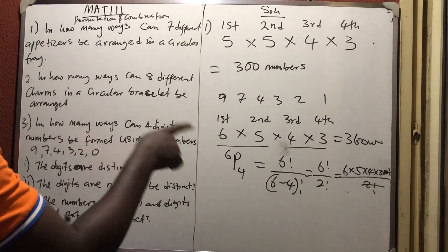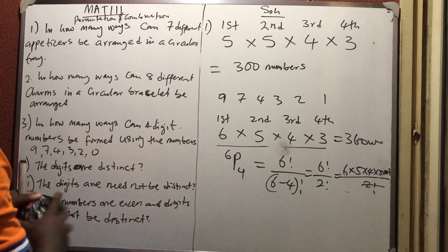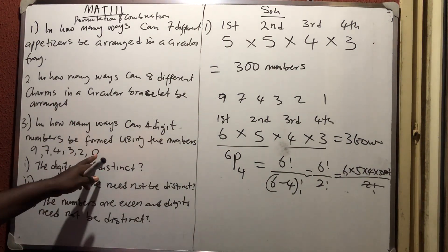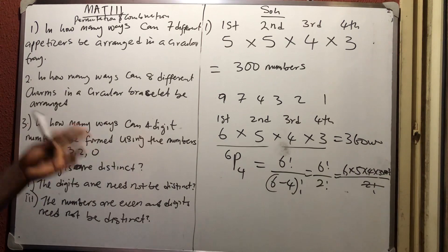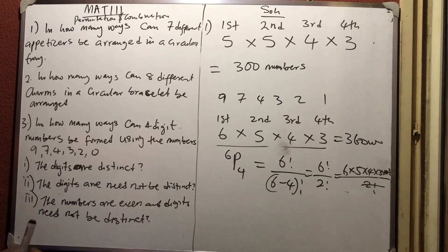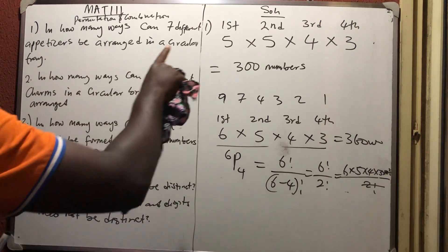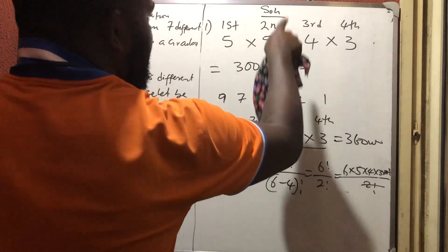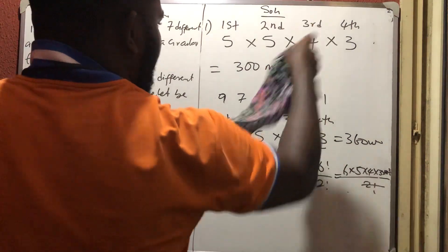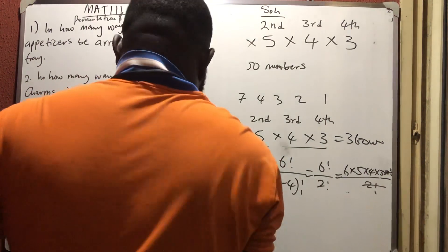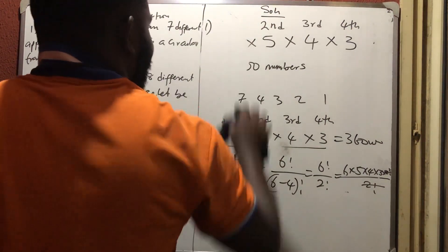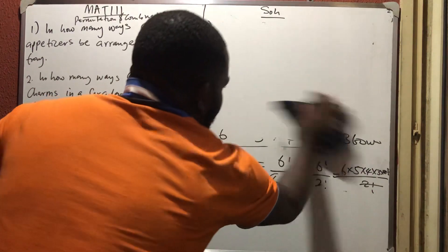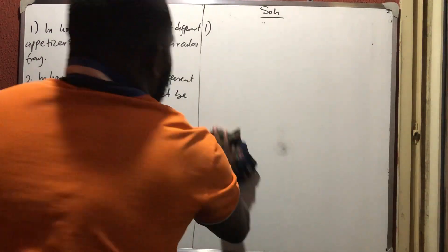I don't prefer using the permutation formula directly, because sometimes a particular digit position has restrictions. It's better to analyze each position — first digit, second digit, third digit, fourth digit — individually.